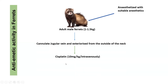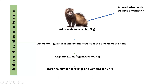The animal is then administered cisplatin at a dose of 10 mg per kg intravenously, which produces the symptoms of emesis. After administration of cisplatin, the animal is observed for the number of retches and vomiting episodes up to 5 hours. Within 5 hours, how many times the animal shows retching and vomiting has to be recorded.